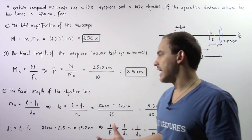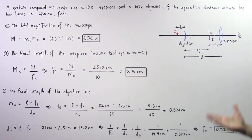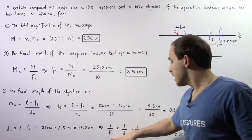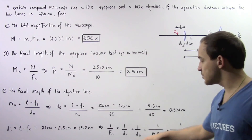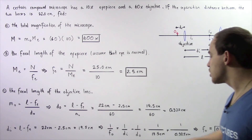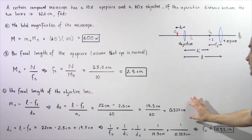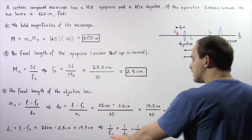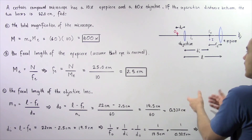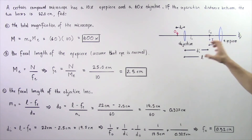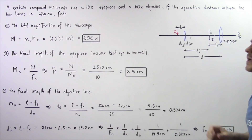Finally, to find the focal length of the objective lens, we use the thin lens equation: 1 over the objective focal length equals 1 over the image distance plus 1 over the object distance. With Di equal to 19.5 centimeters and Do equal to 0.325 centimeters, adding these terms gives a focal length for the objective lens of approximately 0.32 centimeters. Notice these two values are very close, confirming that we can approximate the object as being located exactly at the focal point of the objective lens.